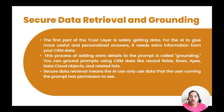The first part of the trust layer is safely getting the data. In the prompt you have placeholders, and in the first process those placeholders will be replaced by the actual data. For the AI to give more useful and personalized answers it needs extra information from your CRM data. This process of adding extra details to the prompt is called grounding.